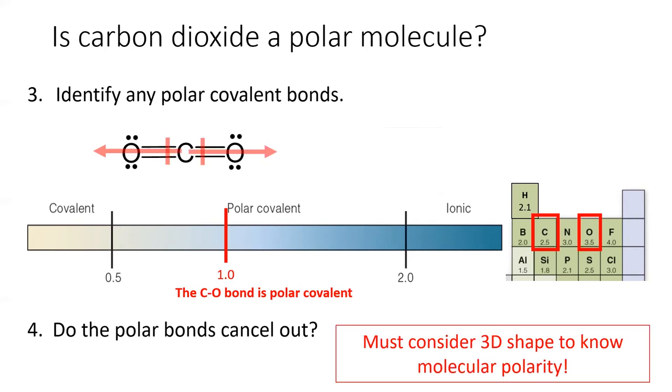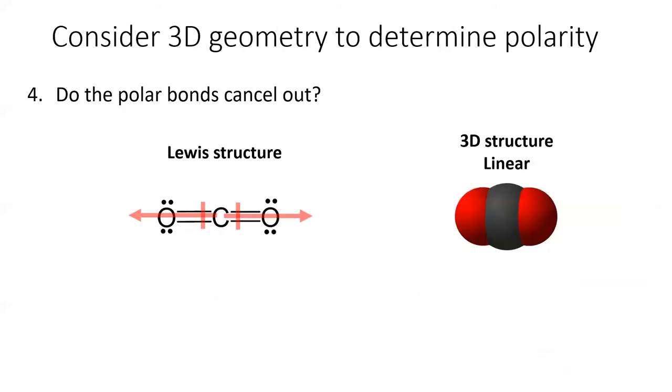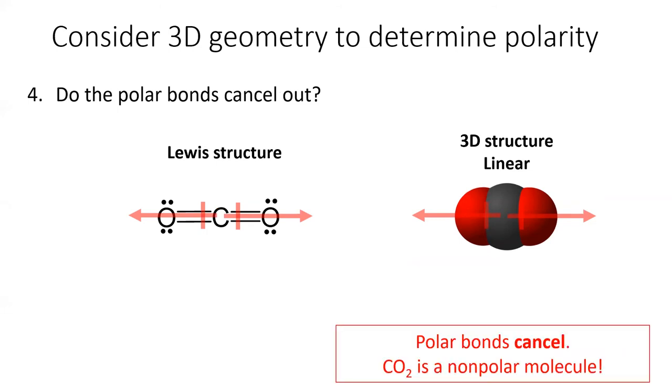I'll draw dipole arrows on each bond. Remember, before we can say whether the bonds cancel out, we need to consider the 3D structure of carbon dioxide. Lucky for us, the carbon dioxide molecule is linear. So this Lewis structure is an accurate representation of the molecule. Dropping the dipoles on top of the molecule, we see that they point in opposite directions with the exact same strength. These polar bonds cancel out, and carbon dioxide is a nonpolar molecule.